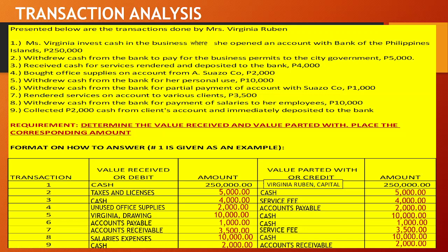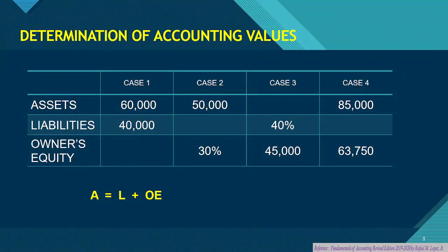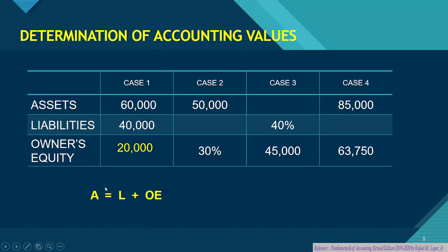Now let's continue to the next problem — determination of accounting values. We have assets, liabilities, and owner's equity. Always remember: in the basic accounting equation, A = L + Owner's Equity. For case one: assets = $60,000, liabilities = $40,000, so owner's equity = $20,000 (that is 60 minus 40 equals 20). Substituting: 60 equals 40 plus 20 — the equation is balanced.